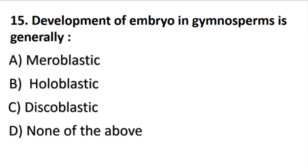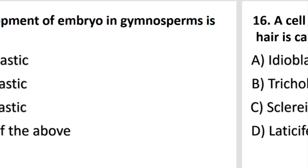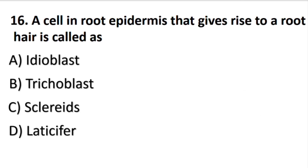Development of embryo in gymnosperms is generally — the answer is A part: meroblastic. A cell in root epidermis that gives rise to a root hair is called a trichoblast.